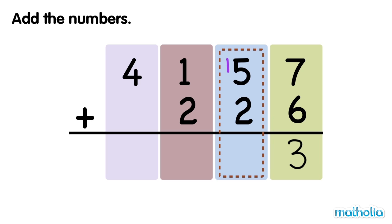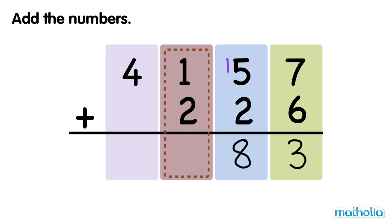Next, we add the tens. 1 ten plus 5 tens plus 2 tens equals 8 tens. Now add the hundreds. 1 hundred plus 2 hundreds equals 3 hundreds.